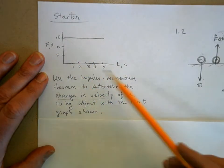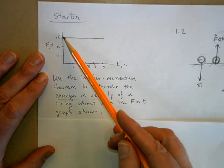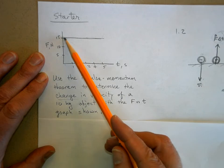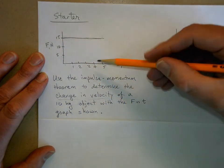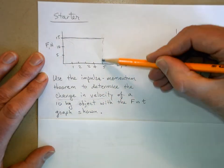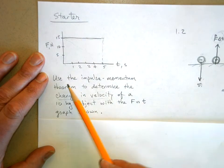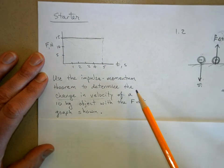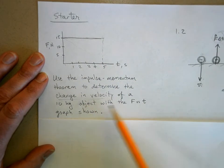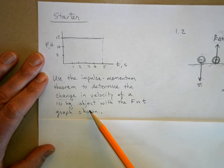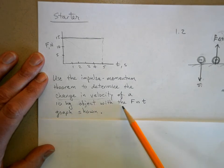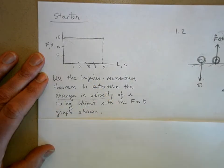Here's a problem. We got force as a function of time, so 5, 10, 15 newtons applied for 5 seconds. And we want to use the impulse momentum theorem to determine the change in velocity of a 10 kilogram mass with the force versus time graph shown.